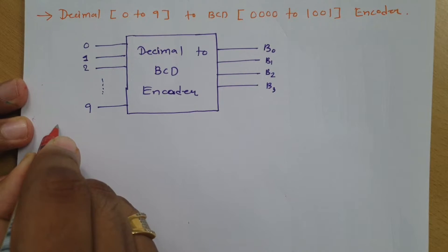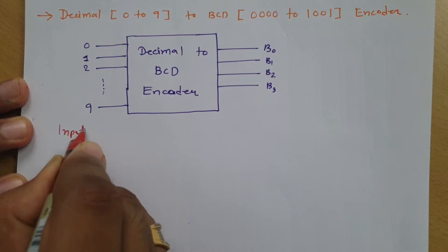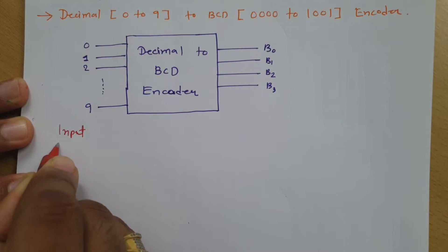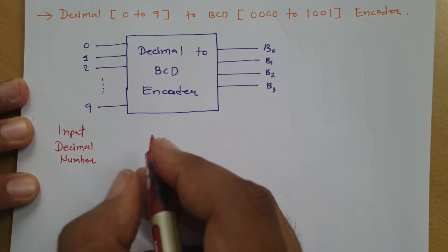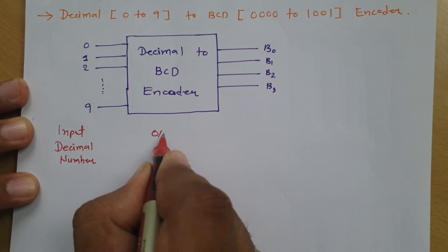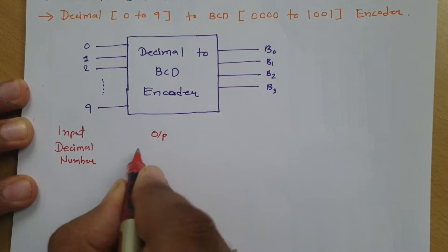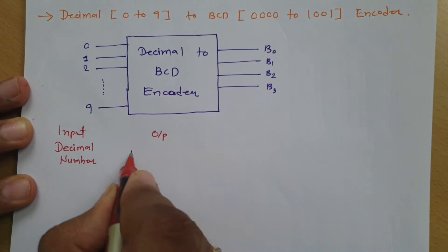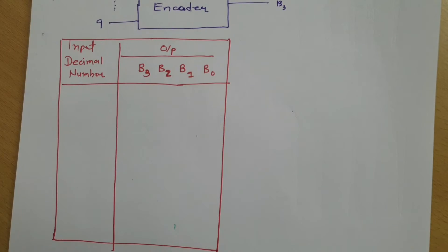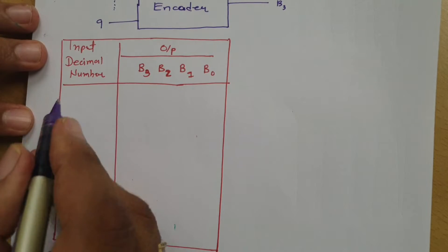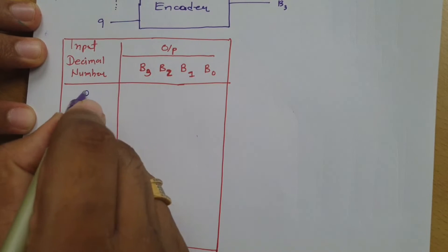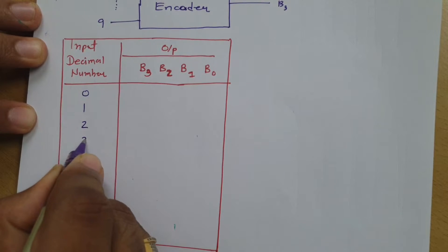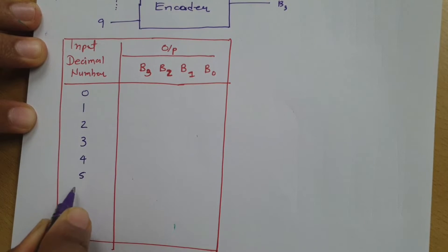At the input side we have the decimal number, and at the output side we have B0, B1, B2, and B3. The decimal numbers start from 0, 1, 2, 3, 4, 5, 6, 7, 8, and 9 — a total of 10 decimal numbers.